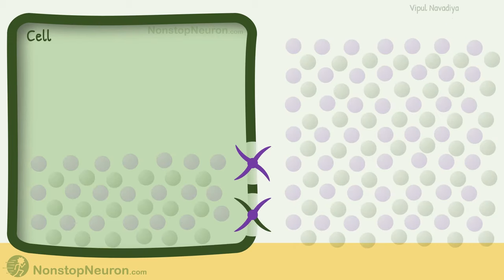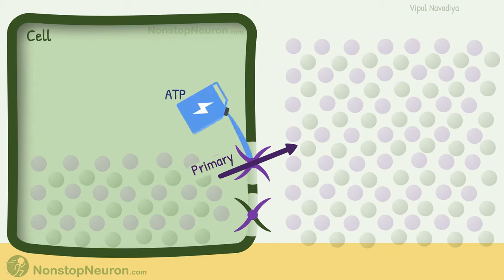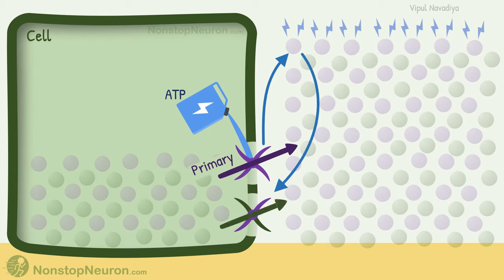Quick summary: In primary active transport, energy comes directly from ATP or other high energy compounds. This transport stores potential energy in the molecules that have been moved. When that energy is used secondarily to move other molecules, it's called secondary active transport. So this is the fundamental difference between primary and secondary active transport.